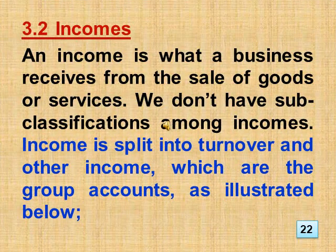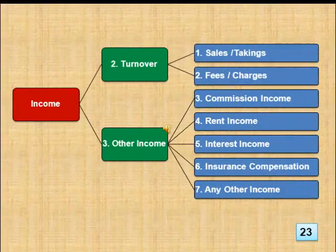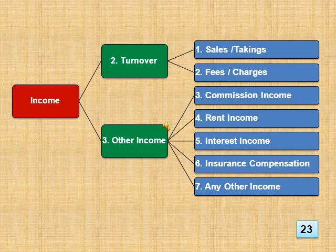Section 3.2 Incomes: An income is what a business receives from the sale of goods or services. We don't have subclassifications. Income is split into turnover and other income, which are the group accounts. The individual accounts in the group of turnover are: 1. Sales takings, 2. Fees charges. The individual accounts in the group of other income are: 3. Commission income, 4. Rent income, 5. Interest income, 6. Insurance compensation, 7. Any other income.